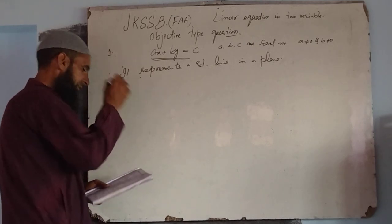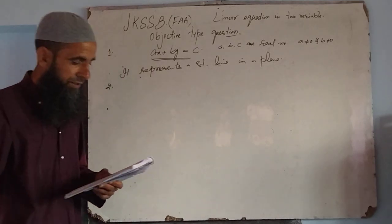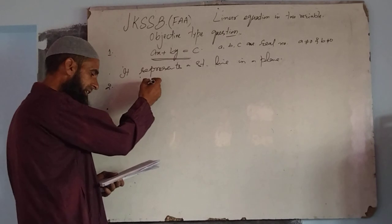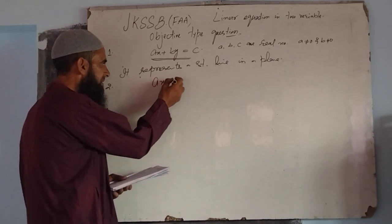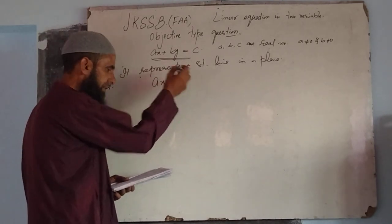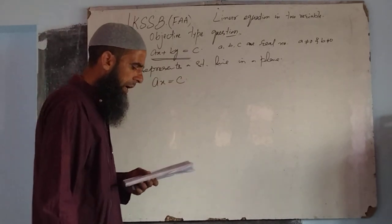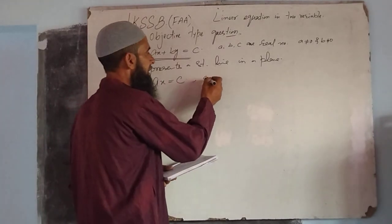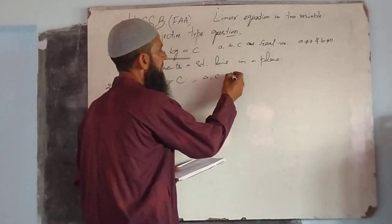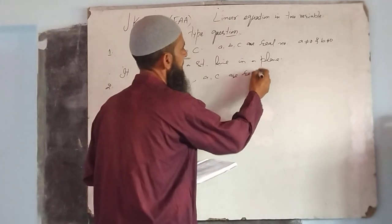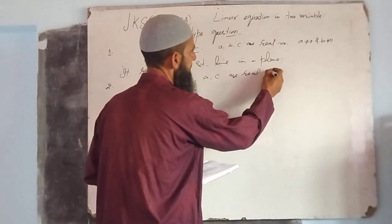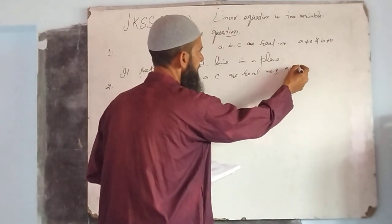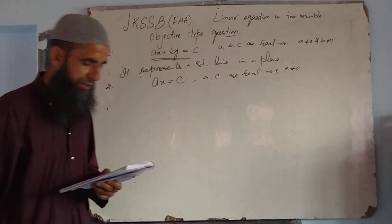Second objective, dear students. The linear equation is ax is equal to c, where a and c are real numbers and a is not equal to zero. This is the linear equation for the second objective.